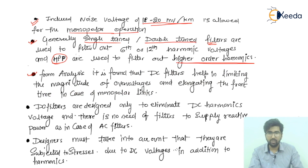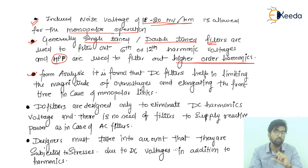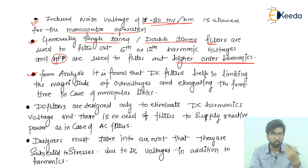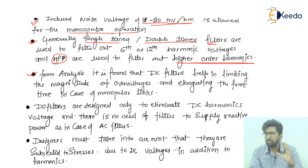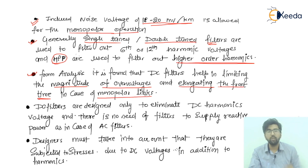From analysis, it is found that DC filters help in limiting the magnitude of overvoltages and elongating the front time in the case of monopolar links. The DC filters reduce the amplitude of high surges — the overvoltage type — which can also arise from DC circuit breakers or surge arrestors. Note that AC filters provide reactive power compensation, but DC filters specifically reduce the magnitude of overvoltages and elongate the front time.